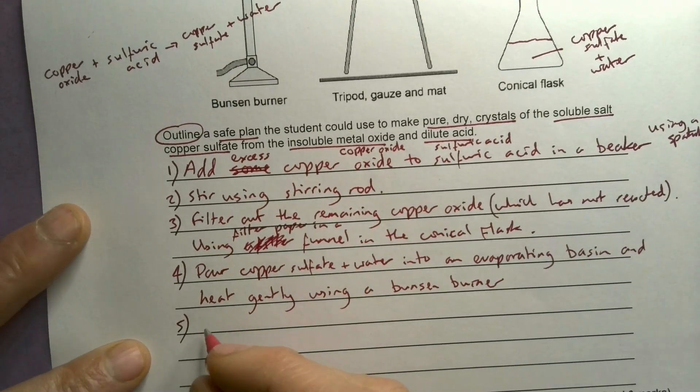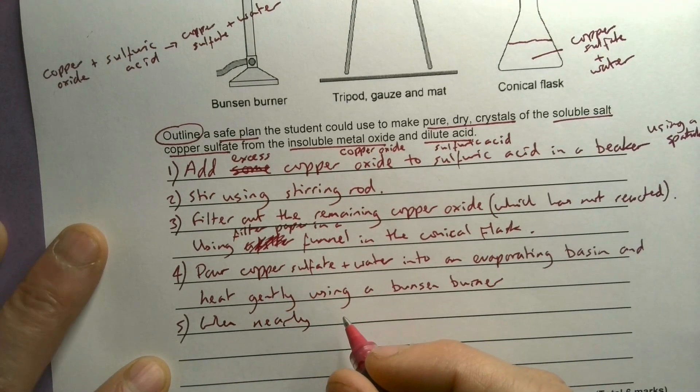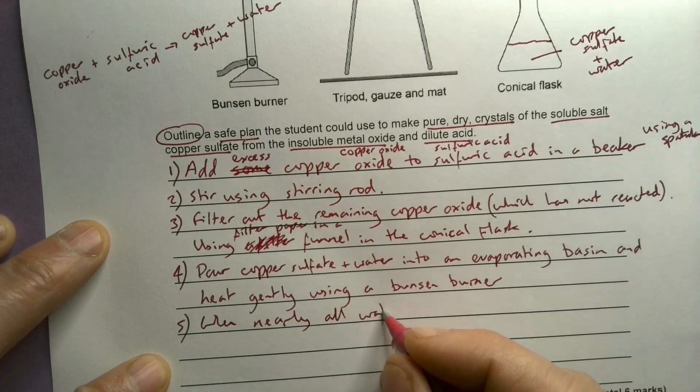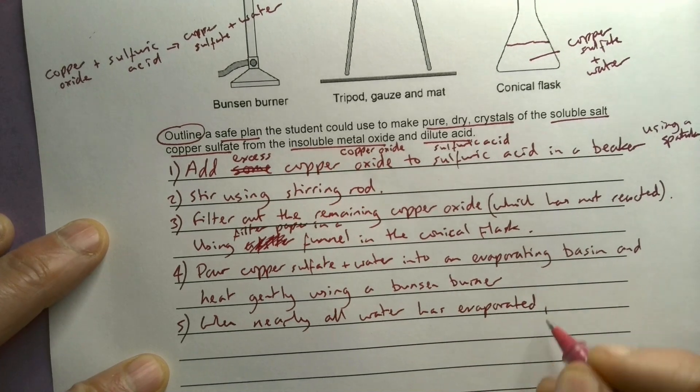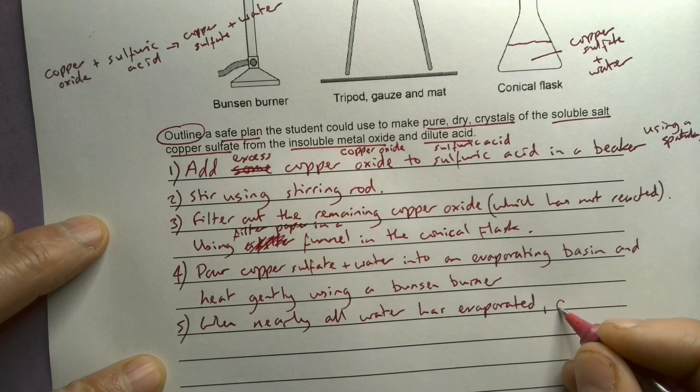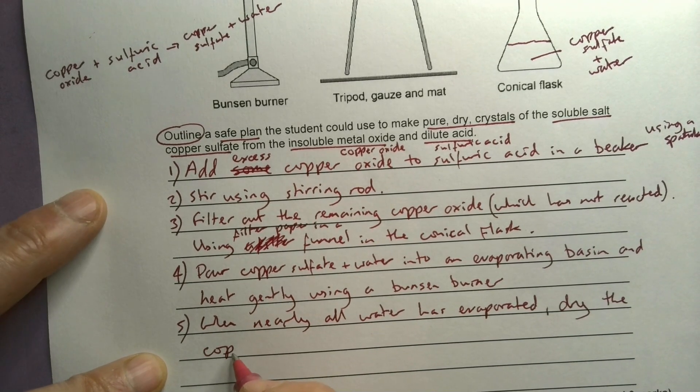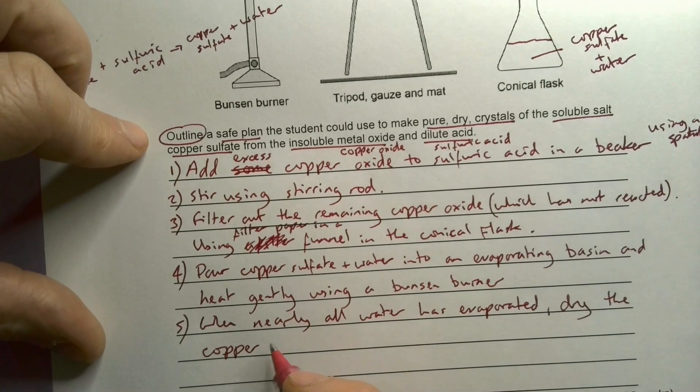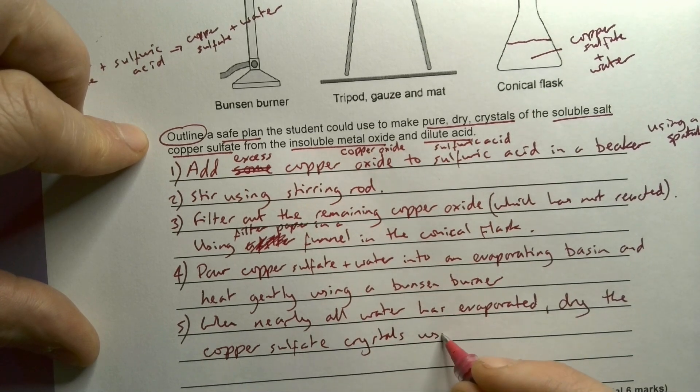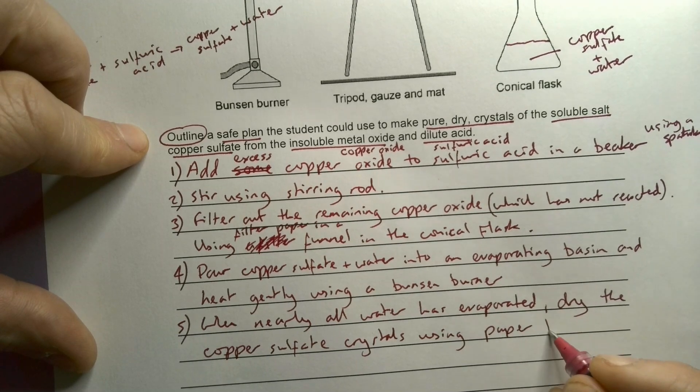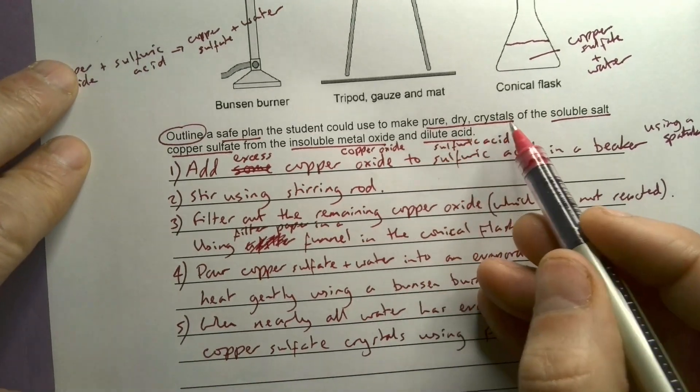I'm going to dry the salt, the copper sulphate crystals. So this is where now I'll be left with crystals. Dry the copper sulphate crystals using paper towels. Okay, so these will be pure, they'll be dry, they'll be crystals. So I've got those. Okay, that's my five things.